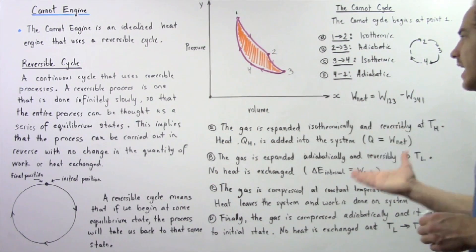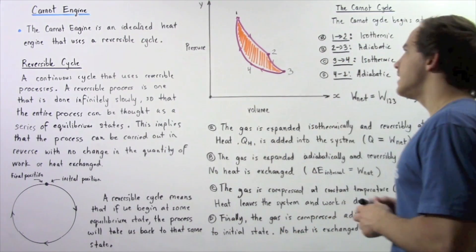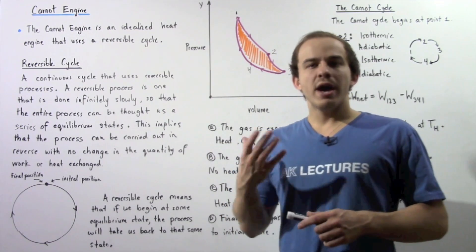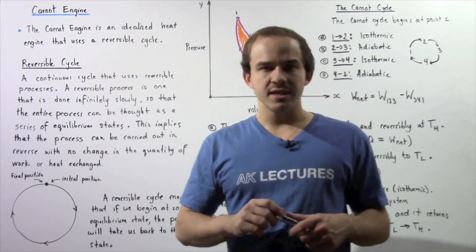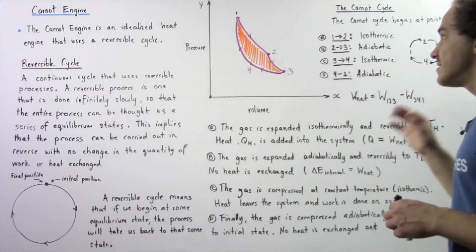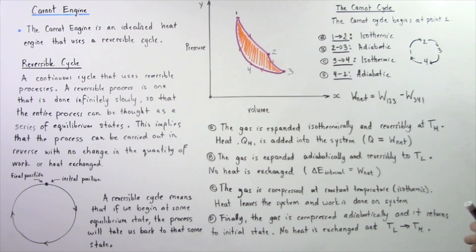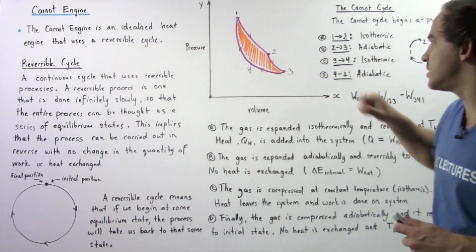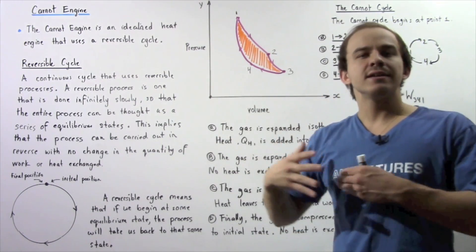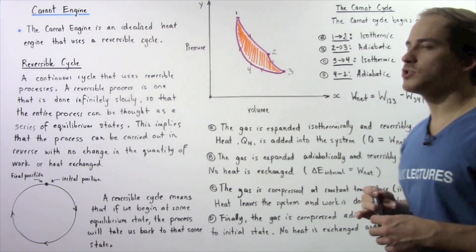Let's examine the Carnot cycle plotted on a PV diagram, where the x-axis is volume and the y-axis is pressure. Any Carnot cycle is composed of four different processes. Starting at point one, the first process takes us from point one to point two and is an isothermal process. Going from point two to point three is an adiabatic process. In both of these processes the gas expands, since volume increases as we move left to right on the diagram.